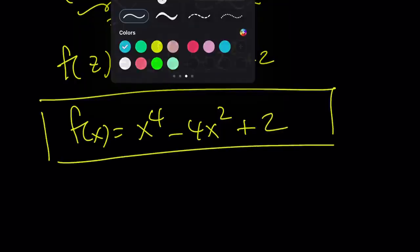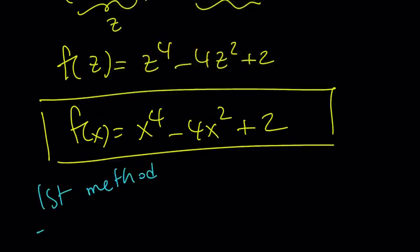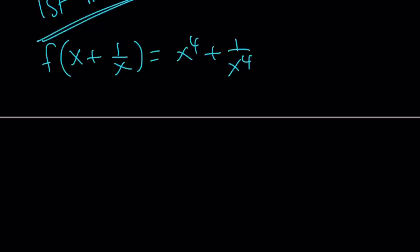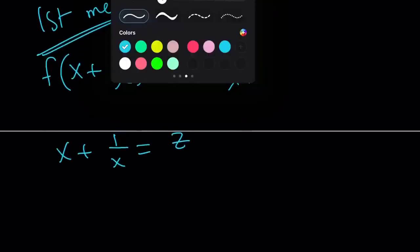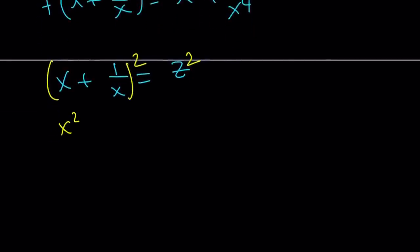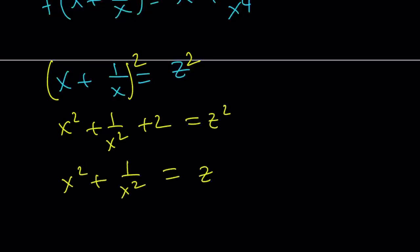Now we're going to go through the first method — and trust me, the first method is much shorter. Here's what we're going to do. The original problem is given as follows and we're supposed to find f of x. Set x plus 1 over x equal to z again. Instead of going through all the quadratic work, I'm just going to square both sides. You get x squared plus 1 over x squared plus 2 equals z squared. Isolate x squared plus 1 over x squared: z squared minus 2. And then square both sides again.